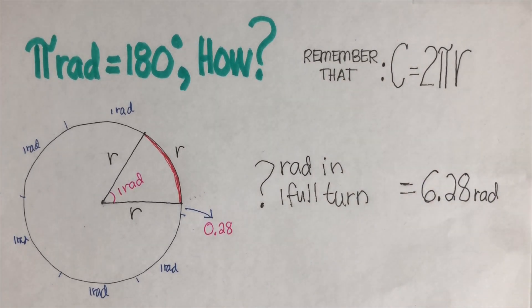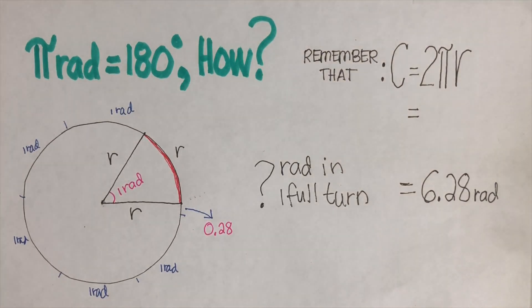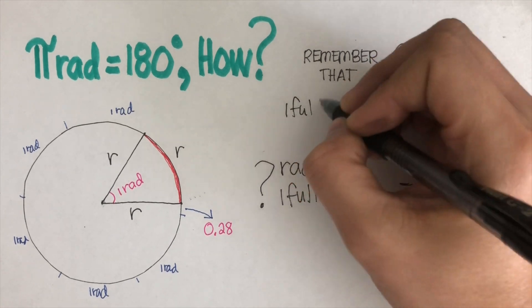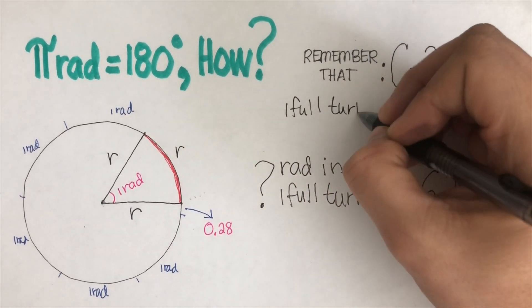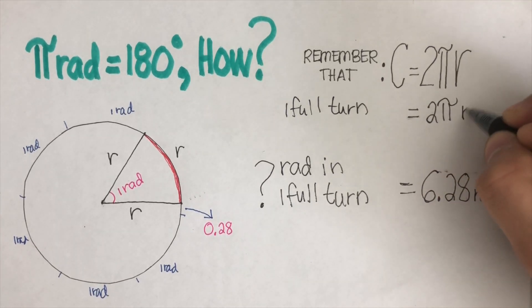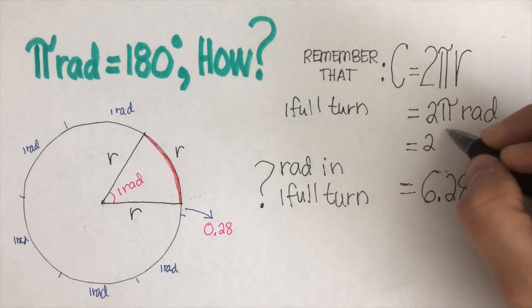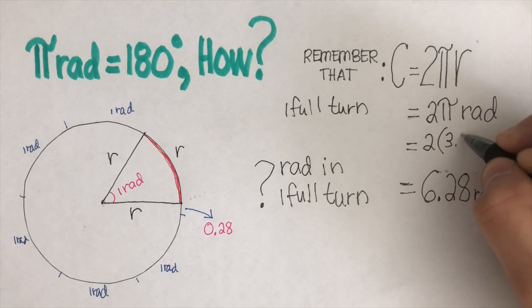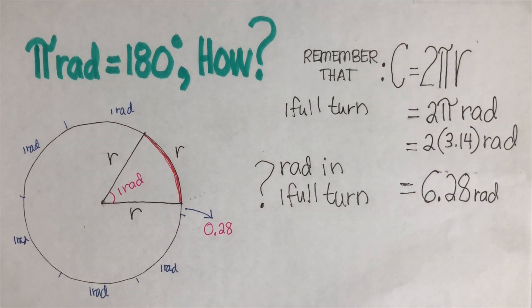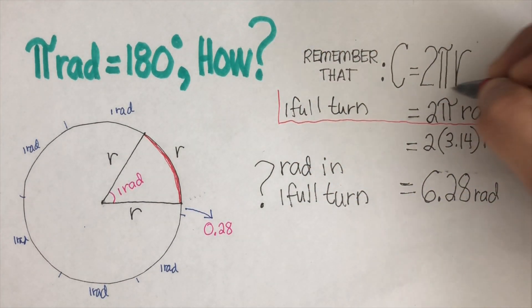Now, how did we get that value? The reason is that one full turn is equal to 2π radians. If we plug in the value for π, which is approximately 3.14, we get 2 × 3.14 = 6.28. So one full turn is 2π radians.